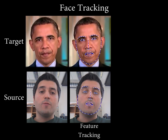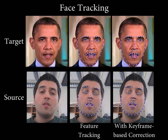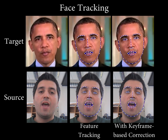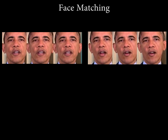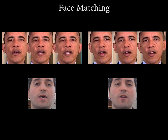We start by tracking facial landmarks in the source and target sequence. We then split the target sequence into consecutive clusters of similar frames. From these clusters, we extract a descriptor that encodes the appearance and motion of the main facial features, which is then used to find a matching source frame.